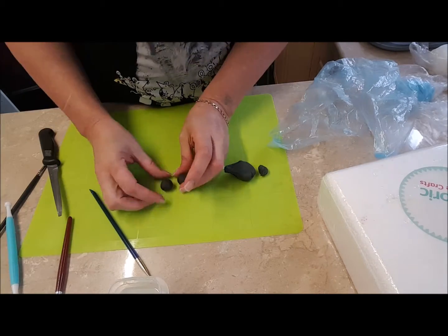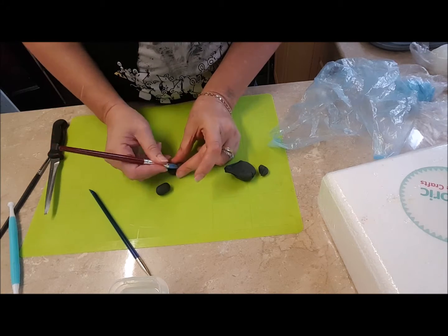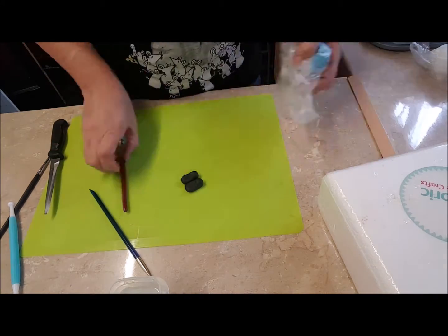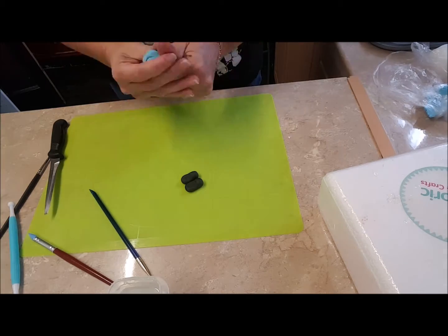Start off with your black gum paste, this is to make the shoes. Just roll them out, put your little heel in and flatten the front end down so you've got the shoes ready.